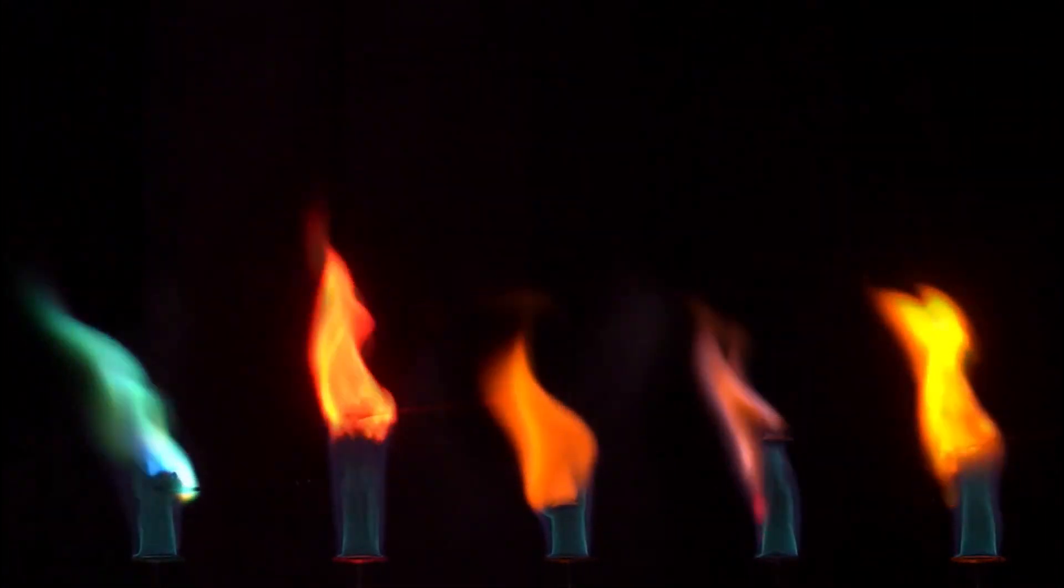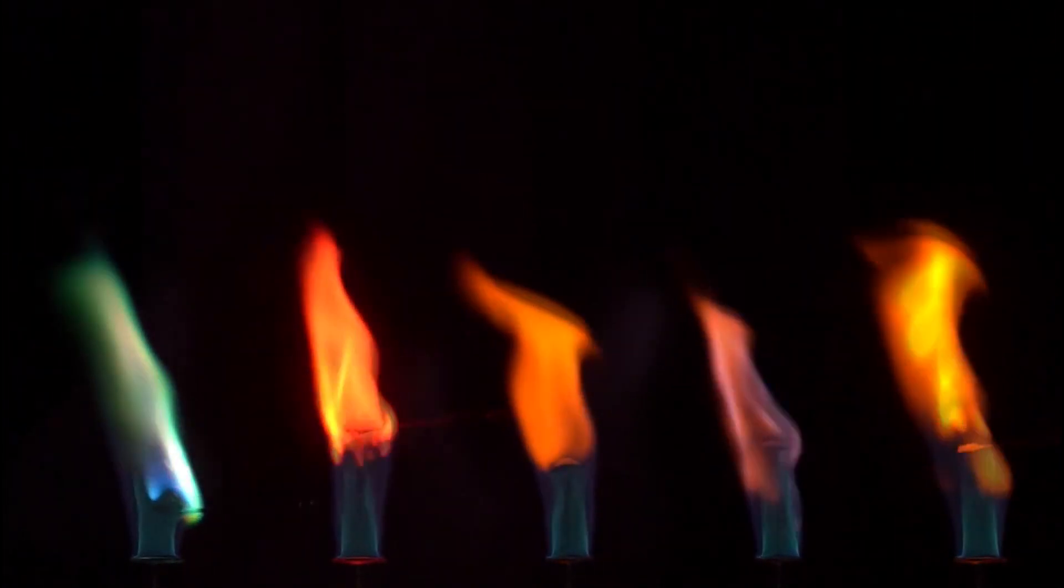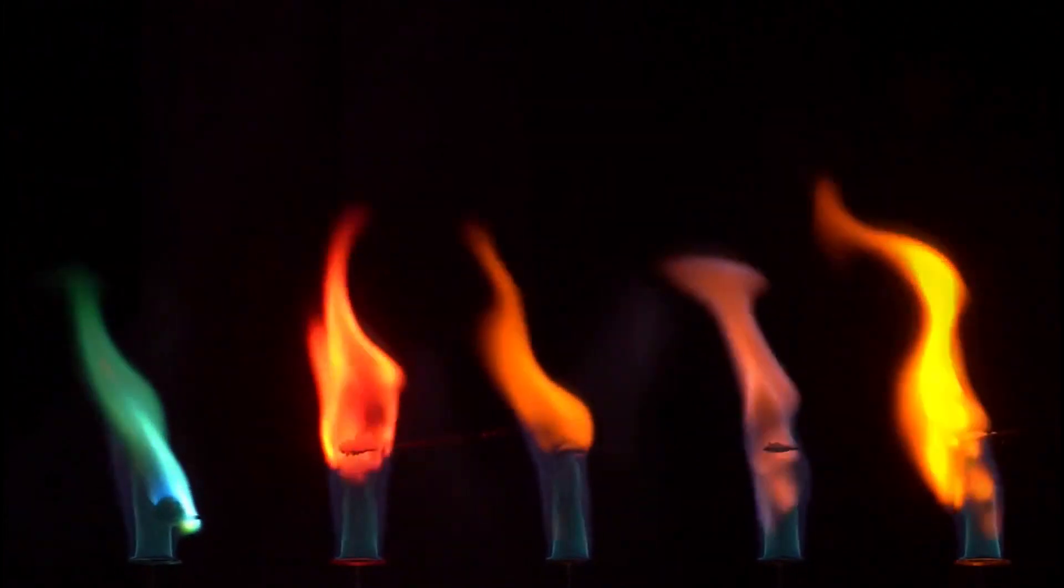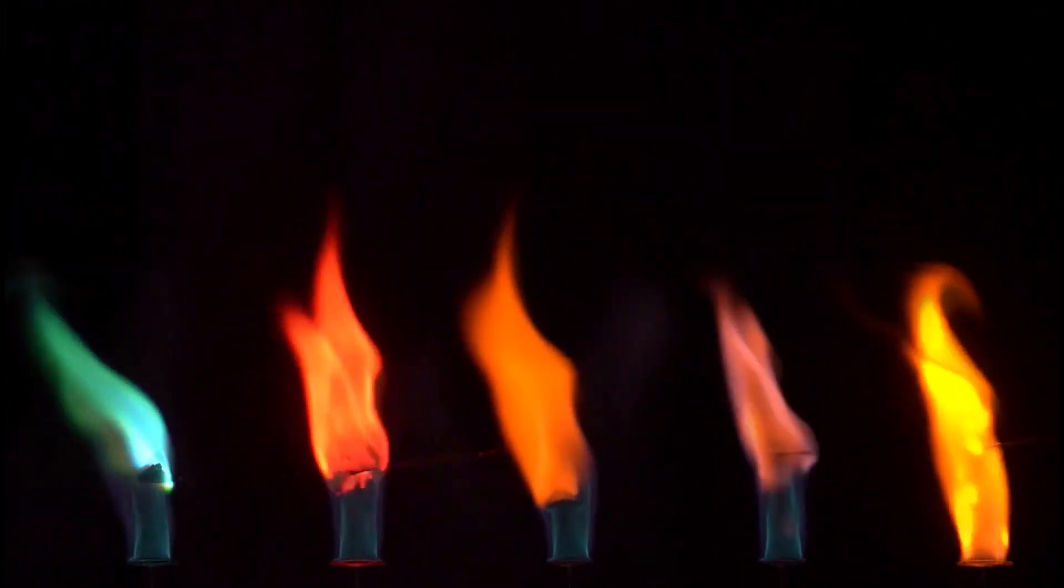When objects get hotter, they emit energy dominated by shorter wavelengths, changing color before our eyes. The flame of a blowtorch changes color from reddish to bluish as it is set to burn hotter.